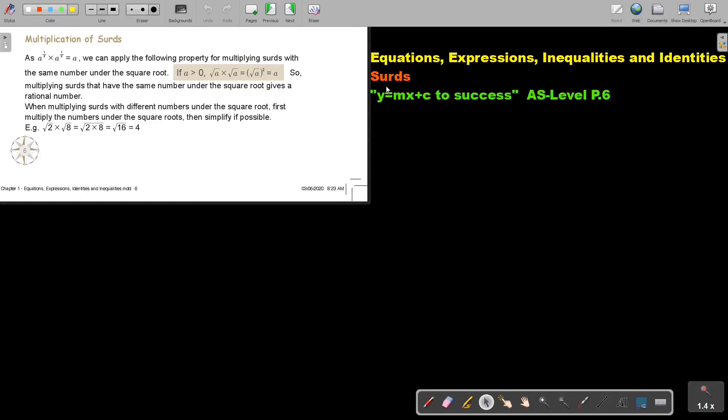In this video we are going to continue with surds. You will find this on page 6 in the Namibia AS level mathematics textbook, y equals mx plus c to success.